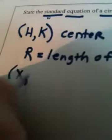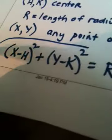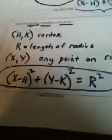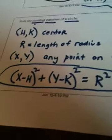And if (x,y) is any point on the circle, then the standard equation of my circle is (x-h)² + (y-k)² = R². And this is a formula that you need to put in memory. It is called the standard form or standard equation of any circle.